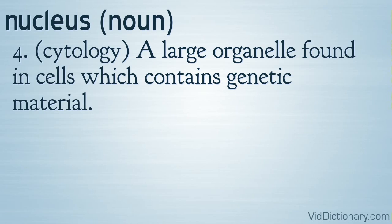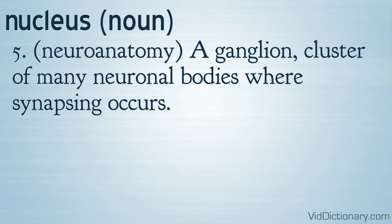Definition 4: Cytology — a large organelle found in cells which contains genetic material. Definition 5: Neuroanatomy — a ganglion, cluster of many neuronal bodies where synapsing occurs.